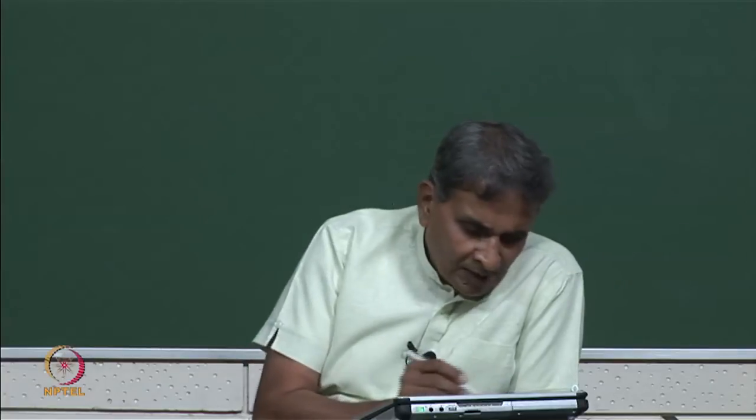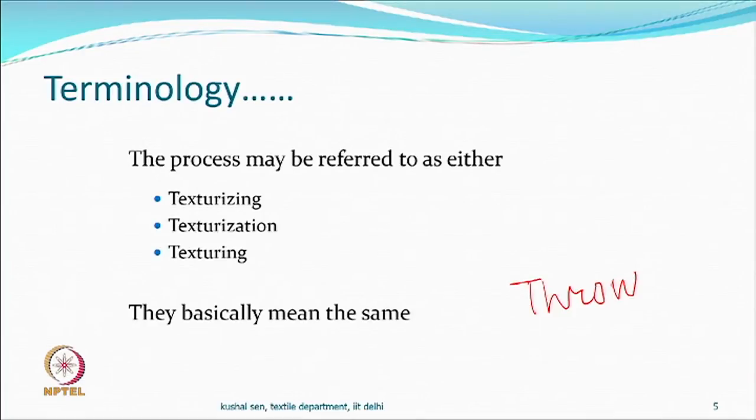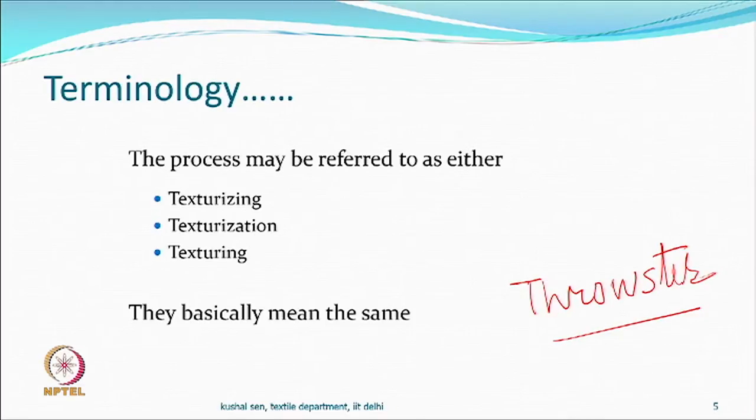People who have been working in this industry are sometimes called throwsters. A throwster was a person who used to do the spinning of silk yarns — silk being the one natural material which is a long filament yarn. When manmade and synthetic fibres were made, filament yarns became available. The term texturizer could also be used, and the industry may be referred to as the texturizing or texturing industry.